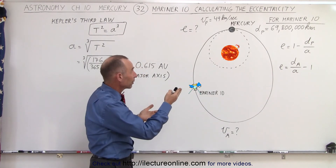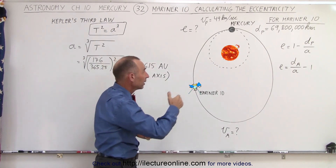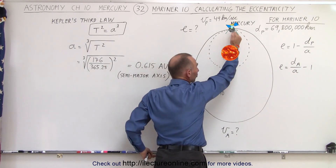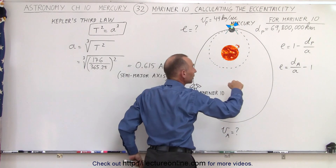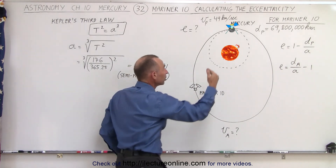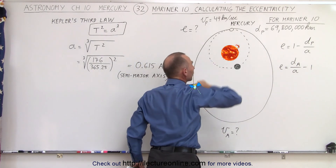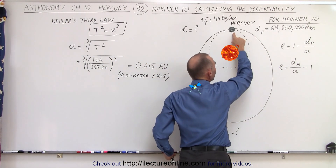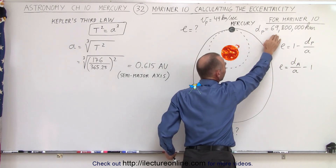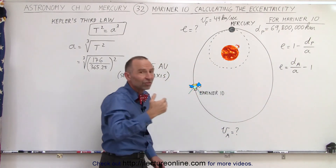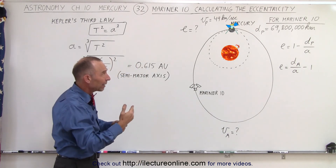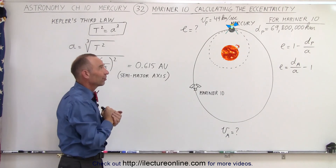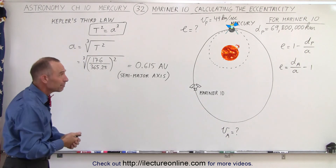The flight path that Mariner 10 will take is such that at this point, Mariner 10 will be at the perihelion position — the closest position to the Sun in its path — but that will be the aphelion position for Mercury, the farthest position in its orbit around the Sun. The distance from Mercury to the Sun when Mercury is at its aphelion is 69.8 million kilometers, which becomes the perihelion distance of 69.8 million kilometers for Mariner 10 in its path.